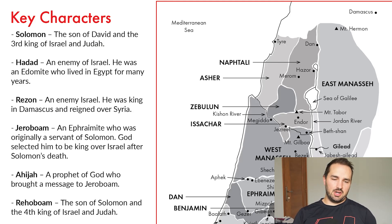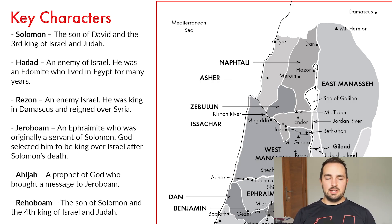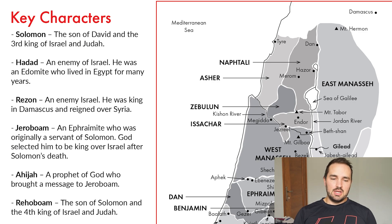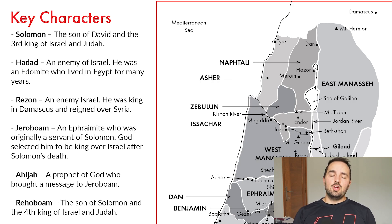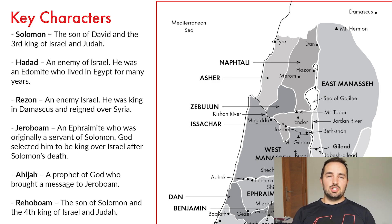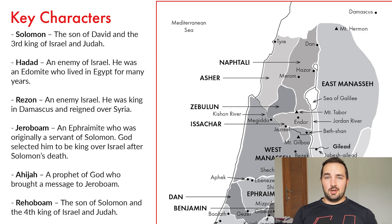We have a host of characters to talk about. First, Solomon, the third king of Israel and Judah. Then a guy named Hadad, an enemy of Israel — he was an Edomite who lived in Egypt for many years. We've got a guy named Rezin who was an enemy of Solomon's; he was king in Damascus and reigned over Syria. Jeroboam will be introduced — he plays a quite significant role in the history of Israel, specifically. He was an Ephraimite who was originally a servant of Solomon's, but later became Solomon's enemy. God actually selected him to be the next king of Israel after Solomon's death — just Israel, not Judah.